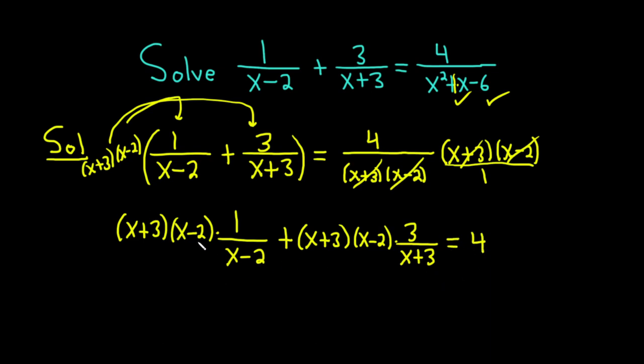Now we can do some cancellation on the left. Again, you want to think of this as a number over 1 in both cases. And so the x minus 2 cancels. So we're left with x plus 3 over 1, which is just x plus 3.